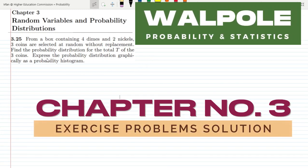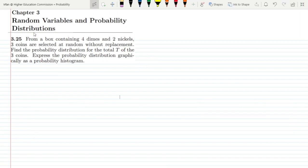Hello guys, I hope all of you will be fine. This is question 3.25 of chapter 3. The statement is: from a box containing 4 dimes and 2 nickels, 3 coins are selected at random without replacement. Find the probability distribution for the total T of the 3 coins (total number of cents), and express the probability distribution graphically as a probability histogram.